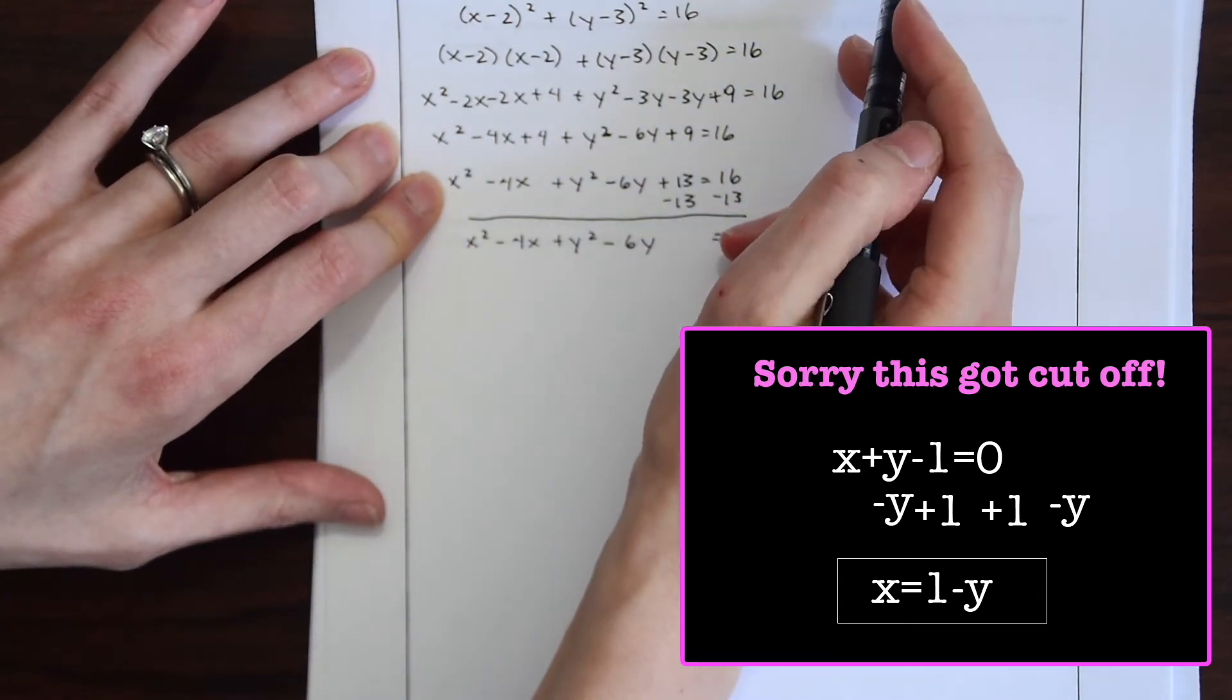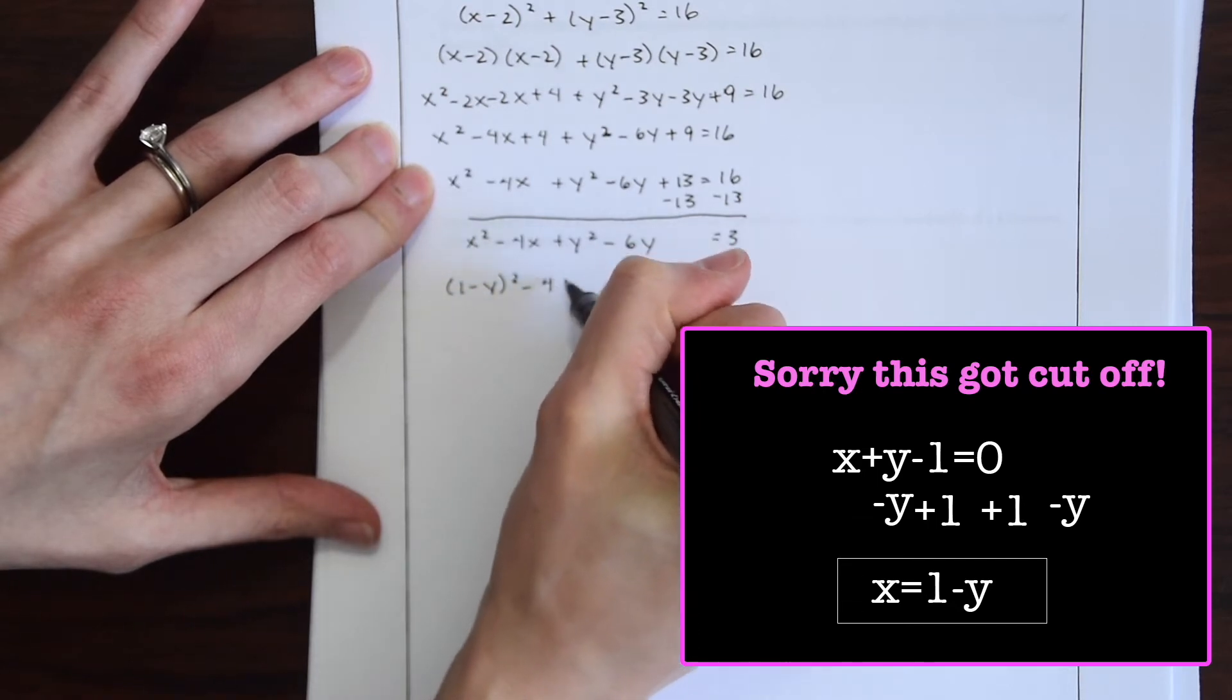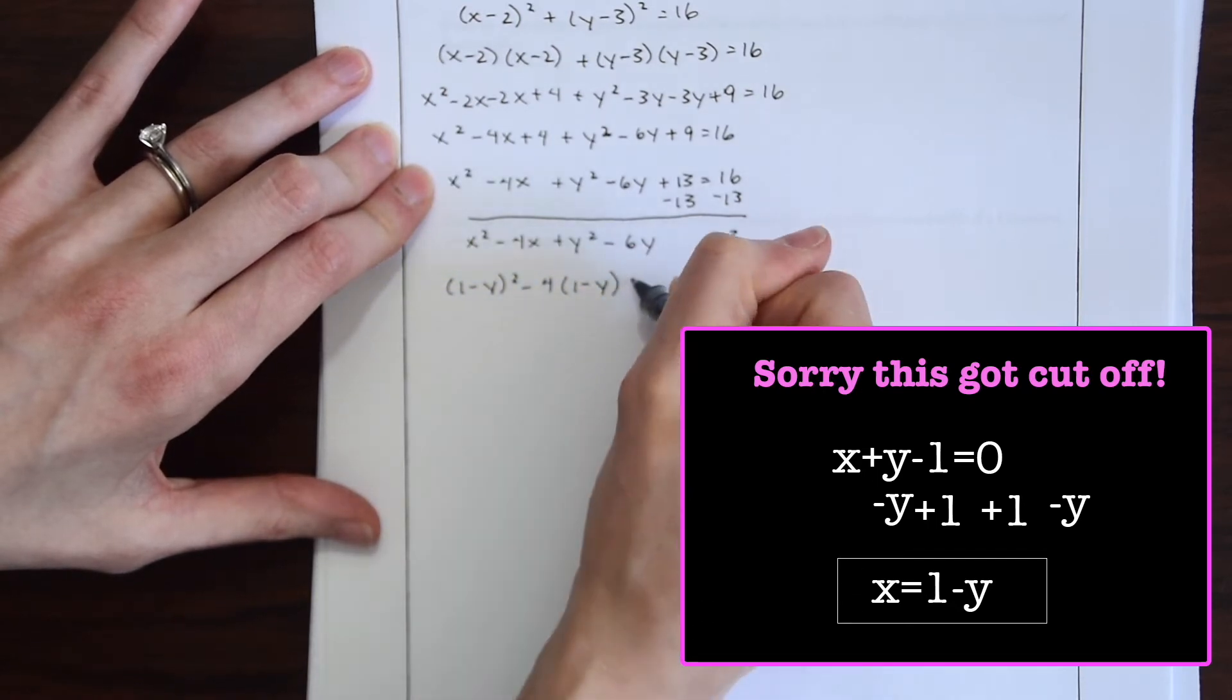So for x squared we're going to have 1 minus y squared minus 4 times 1 minus y plus y squared minus 6y equals 3. And now we can just solve this as normal.